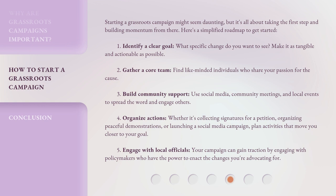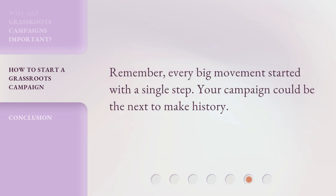Fourth, organize actions — whether it's collecting signatures for a petition, organizing peaceful demonstrations, or launching a social media campaign, plan activities that move you closer to your goal. Fifth, engage with local officials. Your campaign can gain traction by engaging with policymakers who have the power to enact the changes you're advocating for. Remember, every big movement started with a single step. Your campaign could be the next to make history.